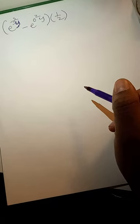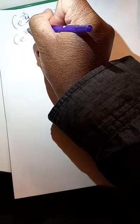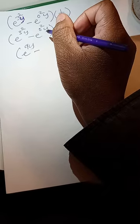So now we have e to the 3 squared y, minus e to the 0 squared y, times 1 half. That is e to the 9y, minus e to the 0 squared y — which is e to the 0 — times 1 half. Then we distribute 1 half through: so it's going to be 1 half e to the 9y, minus 1 half.